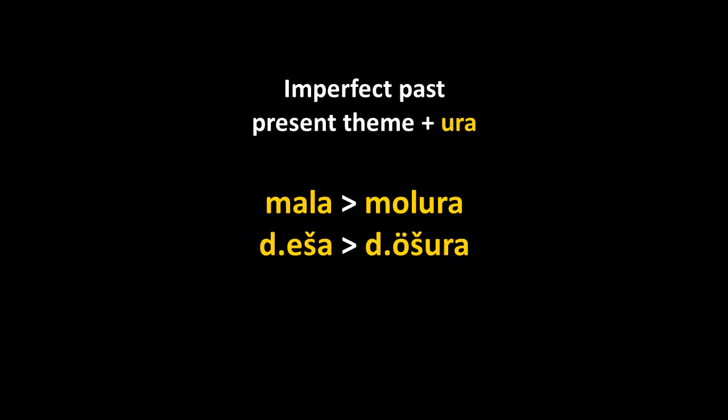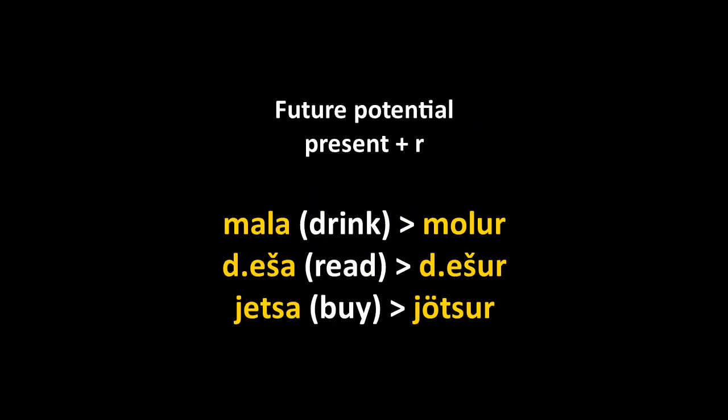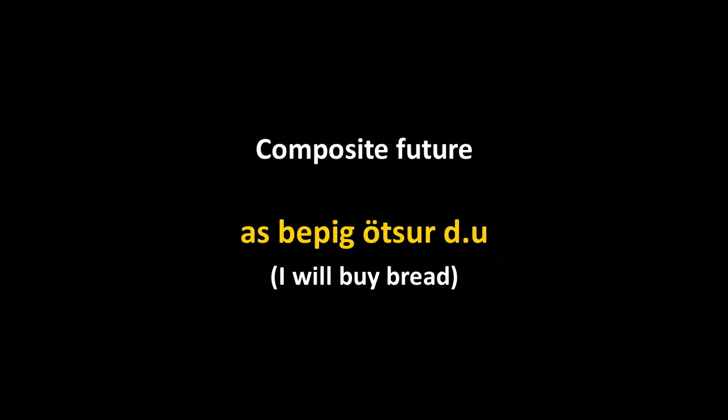The future potential is formed with the present stem plus -r at the end. The present of mala is molu, so the future potential is molur. Desha gives deshur. Yetza 'to buy' has the present yurtsu, so the future potential is yurtsur. Using this, the most common future tense is formed with the future potential plus the verb 'to be' as an auxiliary: as bepig yurtsur du — 'I will buy bread.' If you say as bepig yurtsur without the auxiliary, it means 'I might buy bread' — a doubtful future.